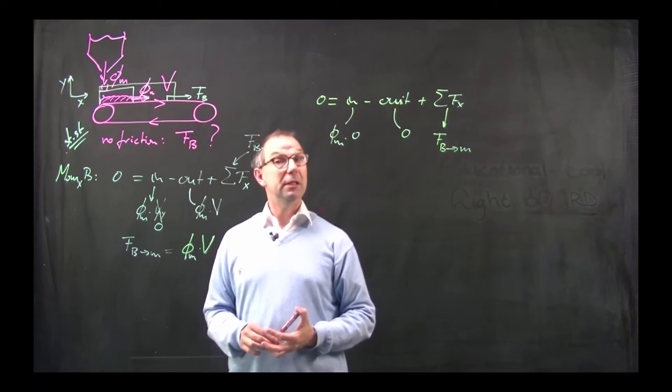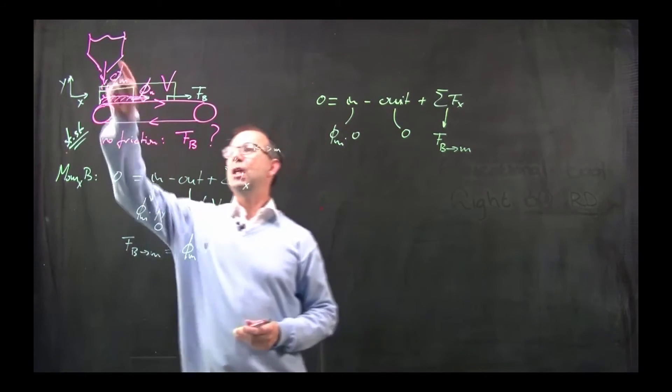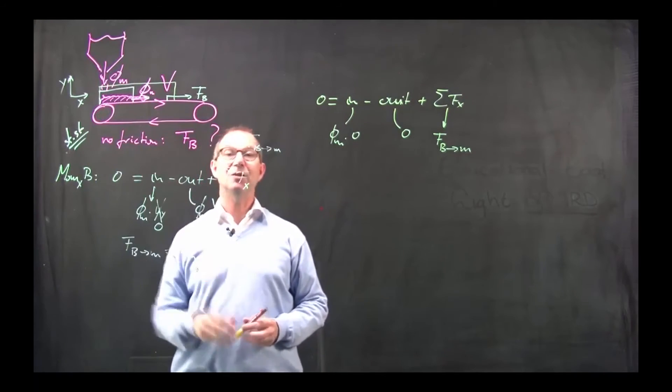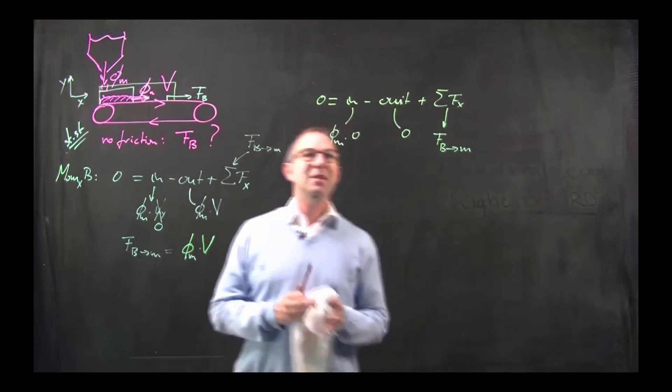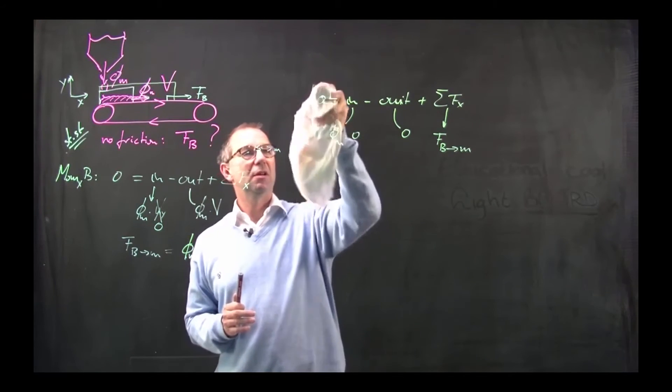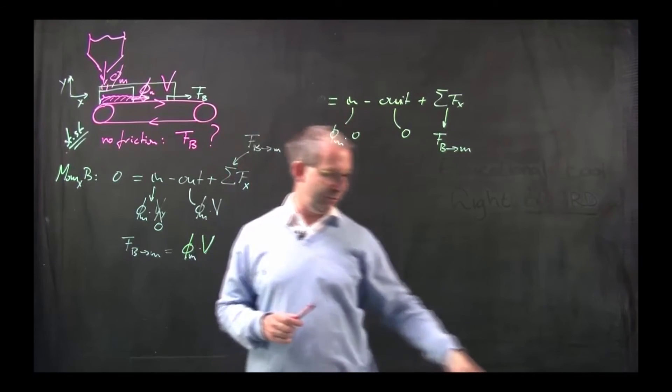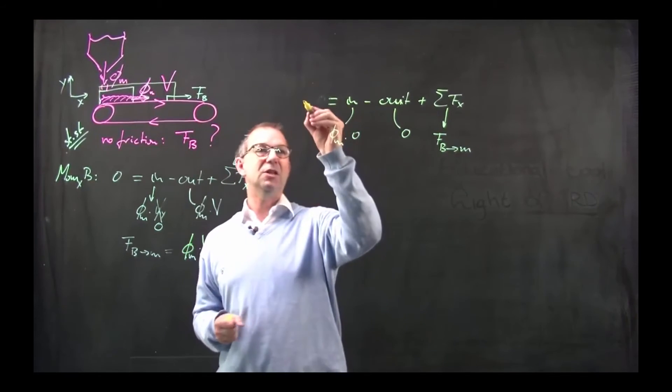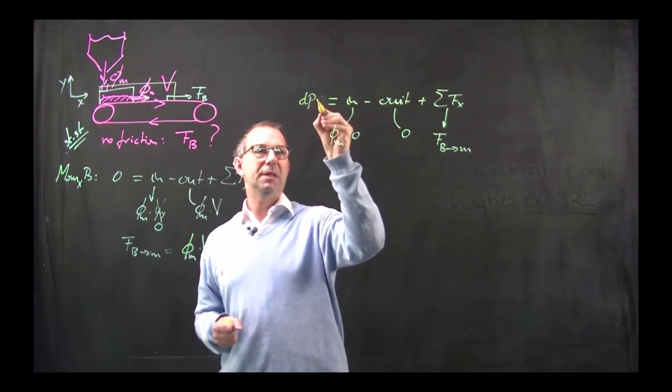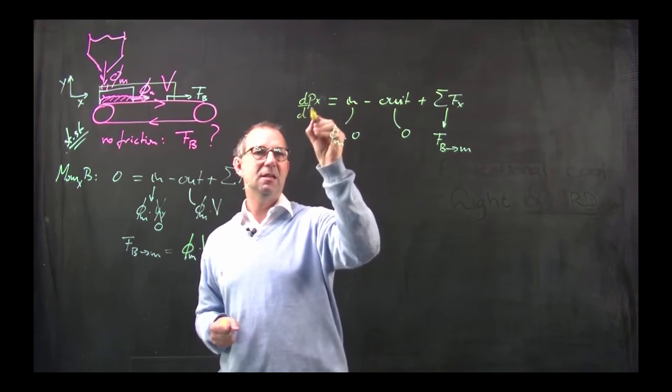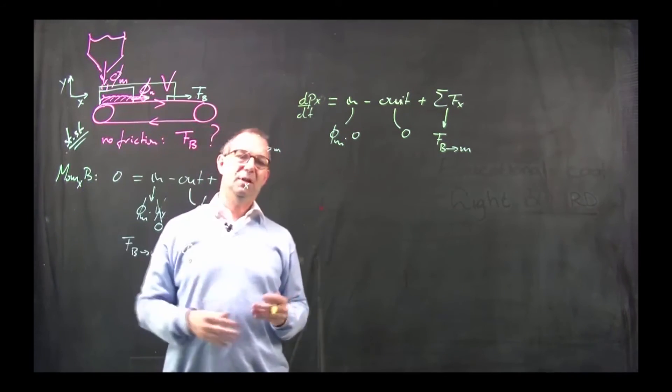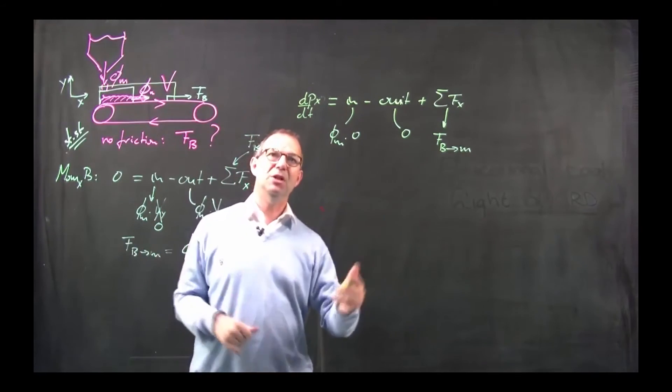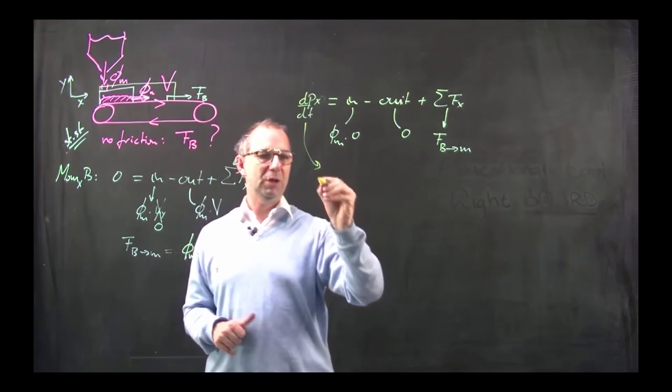This is not really steady state. This is steady state as far as the sand dropping down is concerned. But now, inside the control volume, the momentum is changing. That is not a constant. So the derivative of the momentum that actually is sitting here, dpx/dt, is no longer a zero. More and more of sand has a velocity. So the momentum is increasing. And thus, I need to rewrite this.